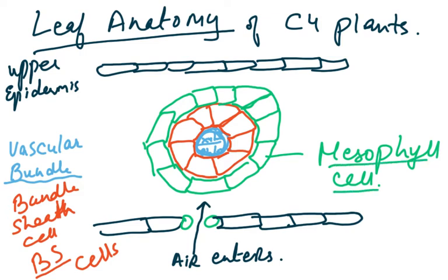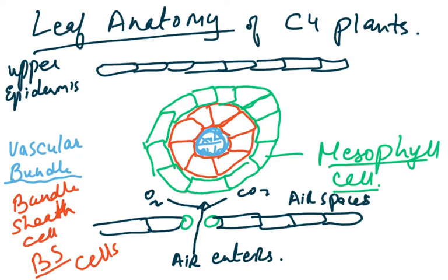When air enters, it brings in both carbon dioxide and oxygen into the air spaces. The trouble is that we have to keep the oxygen away from the Rubisco enzyme, because Rubisco combines with oxygen to start photorespiration. So to recap: upper epidermis, lower epidermis, vascular bundle in the center, surrounded by bundle sheath cells, and the green mesophyll cells around those.